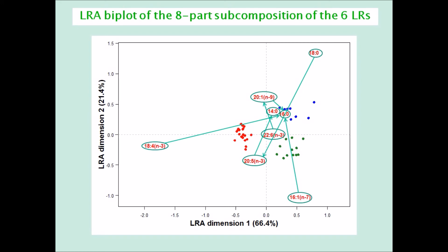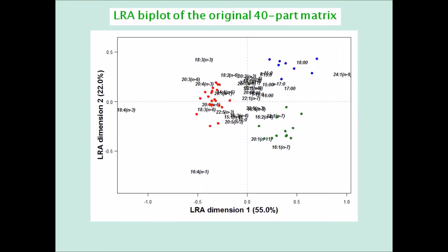Notice how much more complex the LRA of the full 40-part matrix is, which is trying to represent all 780 log ratios by the edges of every pair of parts, and which contains so many points that are explaining very little of the log ratio variance, and not necessary for an explanation and interpretation of the data set.